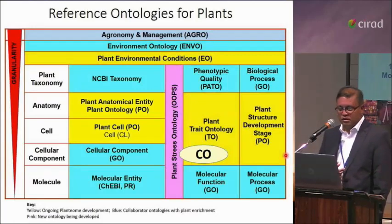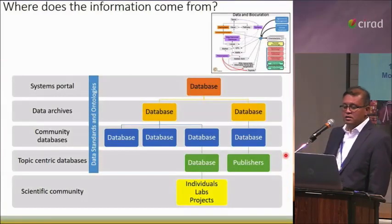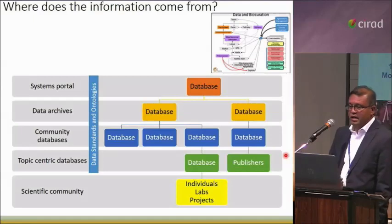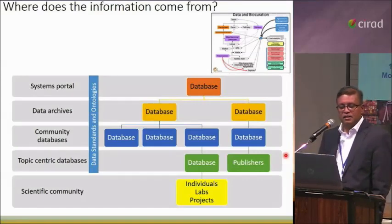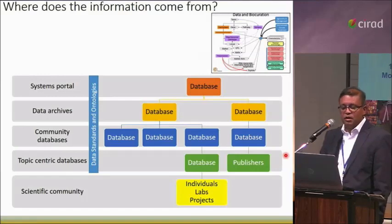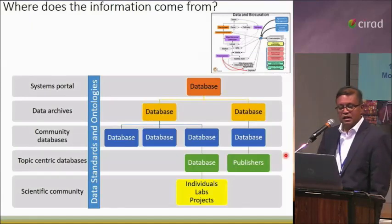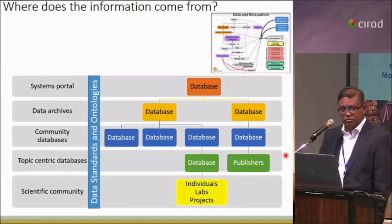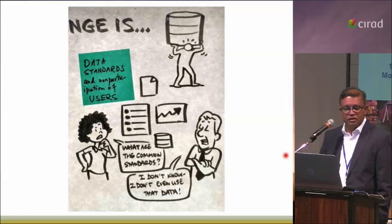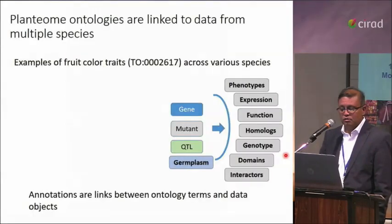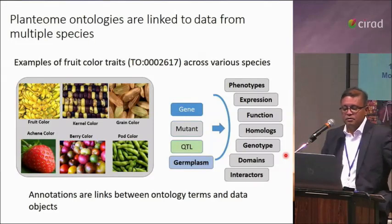You will hear more about extending this work to other communities from Lol Cooper, Maria Angelic, and Austin Meyer, who will present more on the plant stress ontology covering diseases and treatments. Here's the schema: data is generated at different levels, published in manuscripts, individual labs and LIMS projects, sometimes just paper notebooks. There are community databases, data archives, and systems-level portals working at even higher levels. We're trying to bring data standards back into the scientific community through breeding platforms.